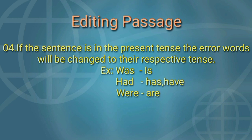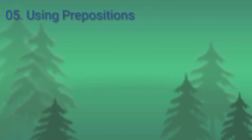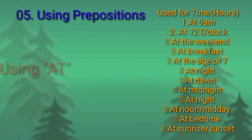Point 4: if the sentence is in the present tense, the error words will be changed to their respective tense. For example, if 'was' is an error in the paragraph, we replace it with 'is'. If it is 'had', we replace it with 'has' or 'have' depending on the object — 'has' for singular, 'have' for plural. If it is 'were', it must be replaced with 'are'. Point 5: using prepositions — 'at' will be used for the following.